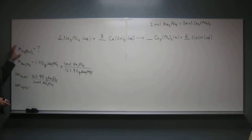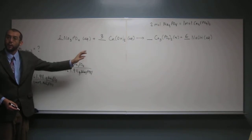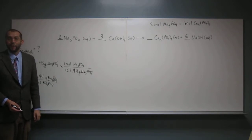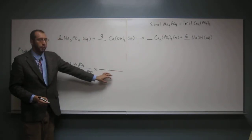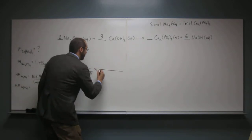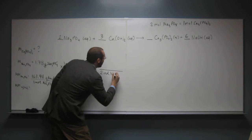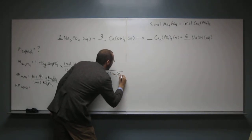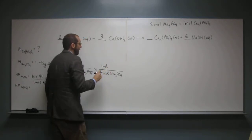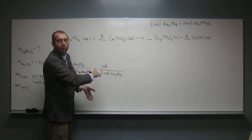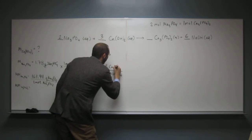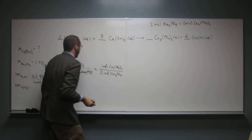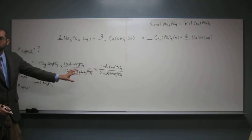But we're looking for the mass of calcium phosphate, not moles of sodium phosphate. We can take moles of sodium phosphate and convert to moles of calcium phosphate using our mole ratio conversion factor. We put two moles of sodium phosphate on the bottom and one mole of calcium phosphate on top. The moles of sodium phosphate cancel, and now we're at moles of calcium phosphate.